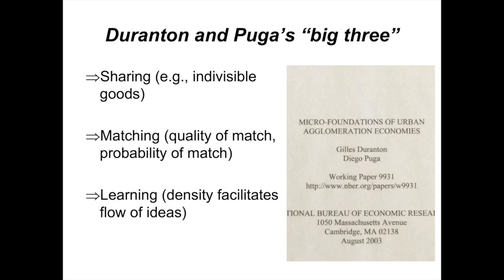The idea of a sharing externality is that in large regions, people can share the cost of indivisible goods. An indivisible good is a large service or organization that loses its function if divided into smaller parts. Think about a professional baseball team — most cities with professional teams have well over one million people, so a city of 50,000 couldn't field one twentieth of a team. A subway system is also an indivisible good — a small region can't build a mini version because a subway needs multiple stations to be useful. A large area has a critical mass to share the cost of these large indivisible goods.